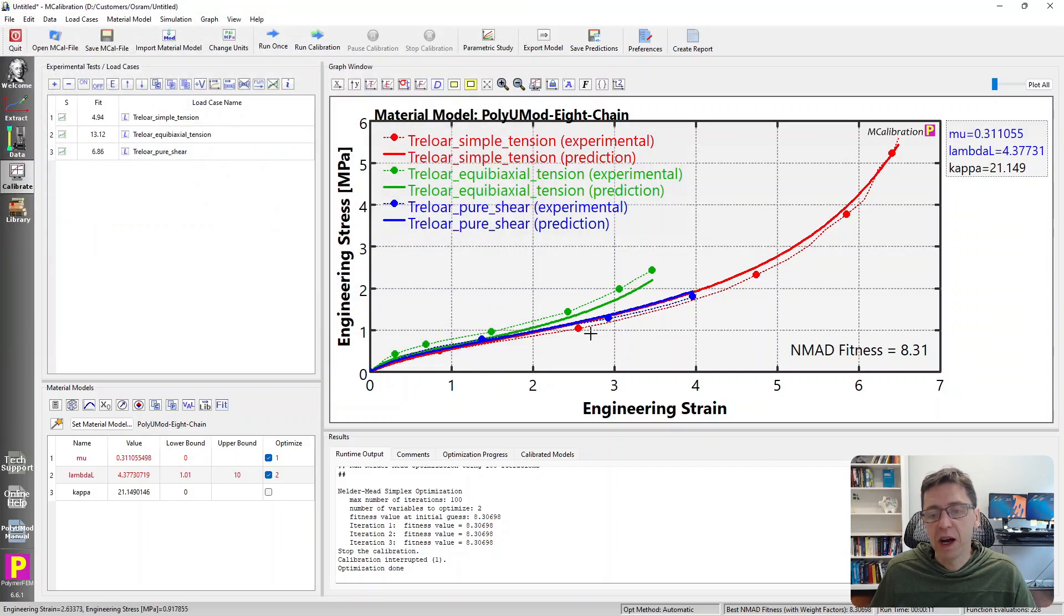So here it is. It predicts the different loading modes relatively well. And since this material model, this hyperelastic material model, is only I1-based, there is no I2-dependence in it, we tend to underpredict the biaxial stress. But otherwise, it's a good model for large strain response.